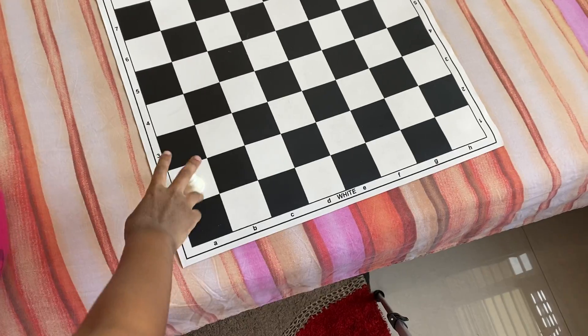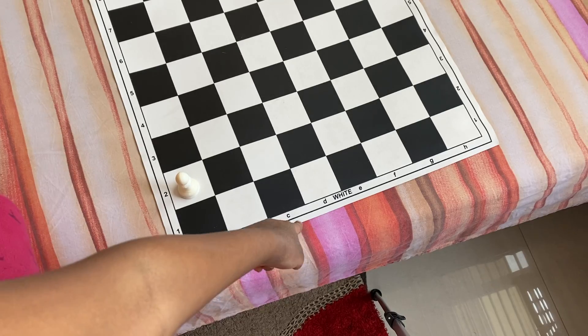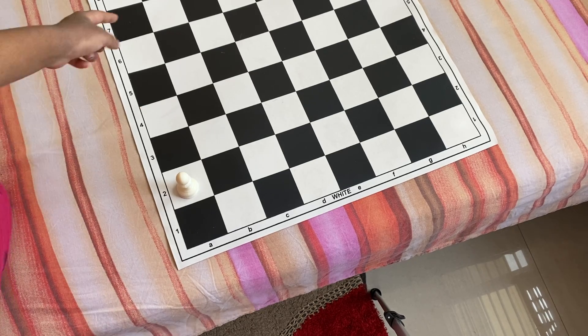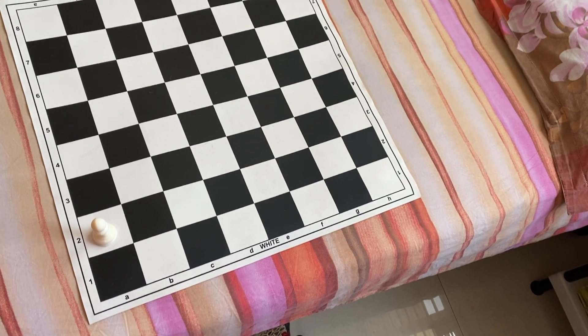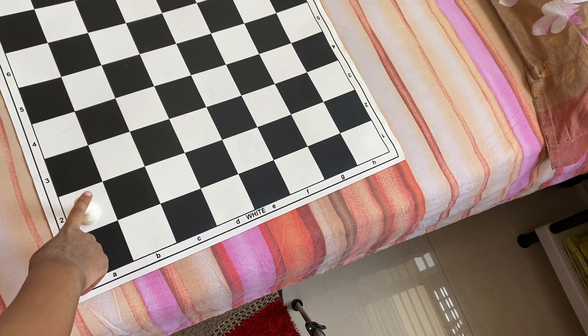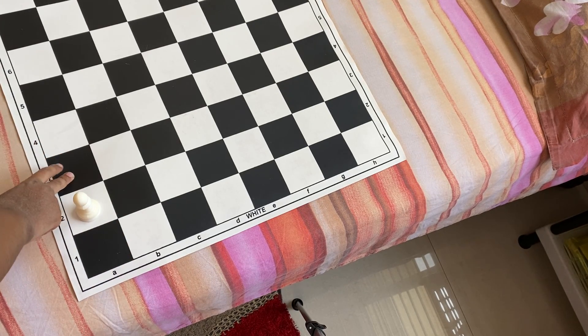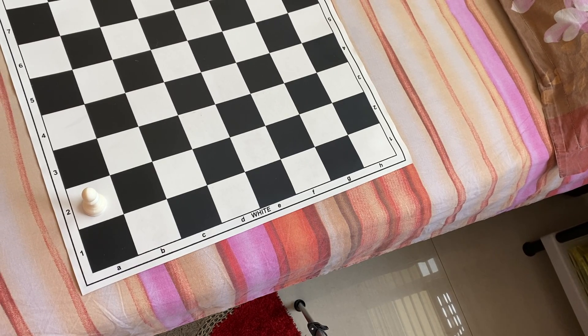So a pawn, whenever it's on its 2nd rank if it's the white pawn, and if it's on the 7th rank for the black pawn, that means they have choices. So the white pawn can move 1 or 2 steps forward. The same goes with the black ones.